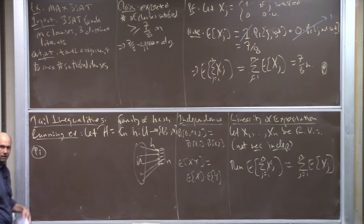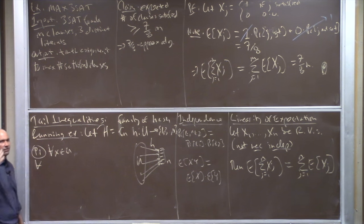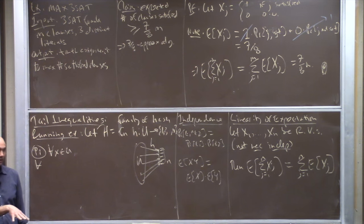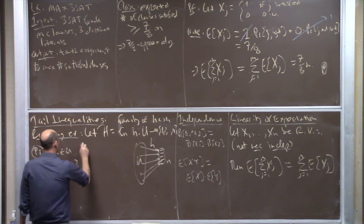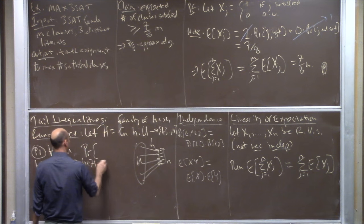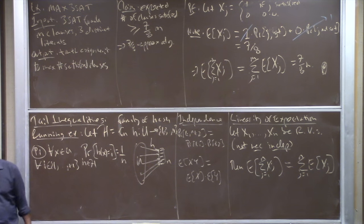For starters, assume something very weak: for any particular universe element, it's equally likely to map to any of the N buckets. This is property P1. Importantly, I'm not assuming that where different elements get mapped are independent events. For all universe elements X and all buckets I, the probability over the choice of hash function that H(X) = I equals 1/N. This is a pretty minimal assumption for hash functions to be reasonable.